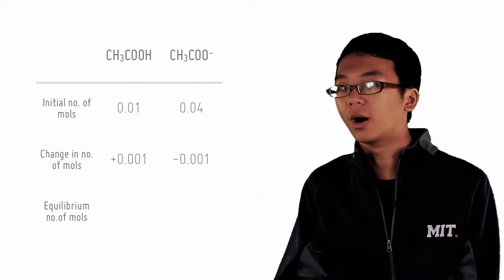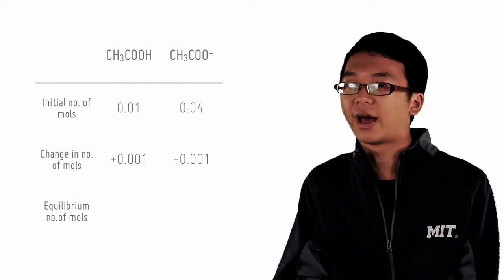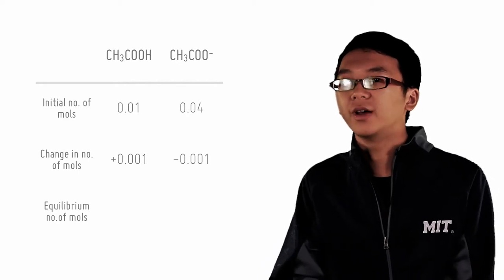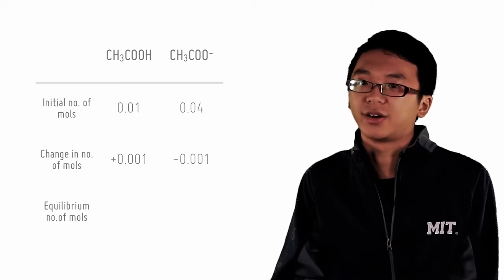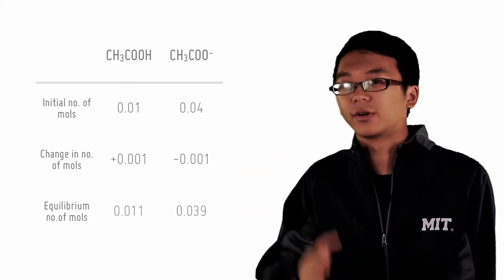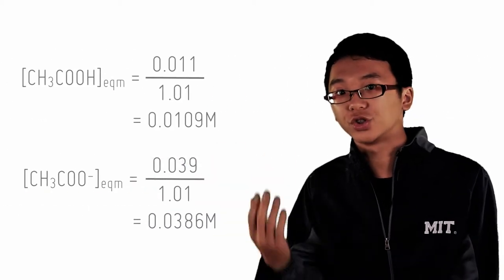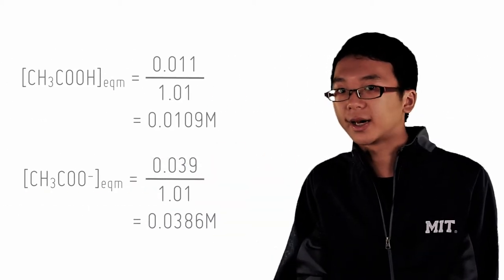We have the change because well, 1 mole of HCl reacts with 1 mole of ethanoate to form 1 mole of ethanoic acid. And we have just calculated the number of moles of HCl added so we can get the final number of moles. Divide this by the new volume, sorry, for both sides.